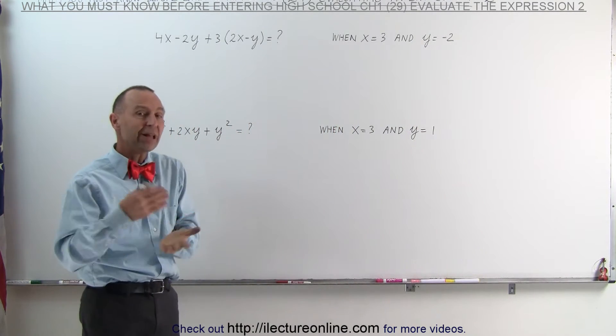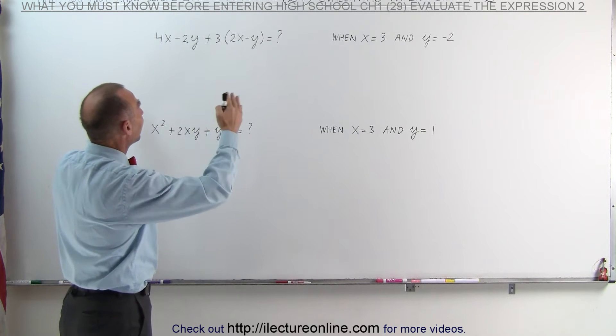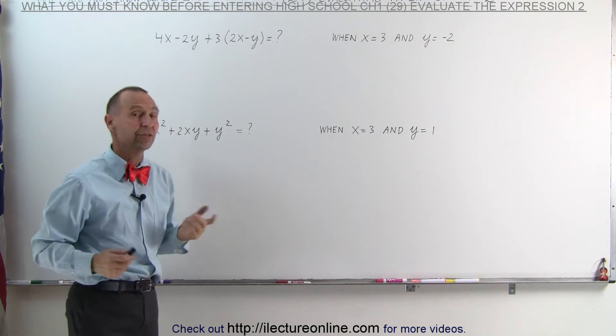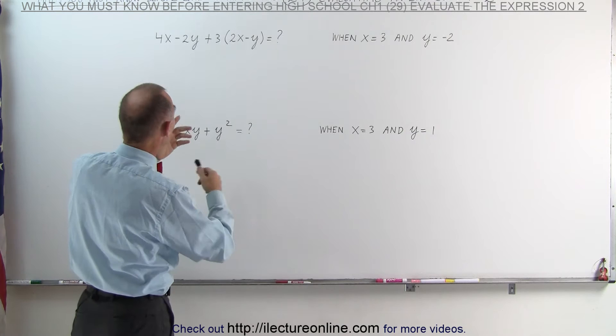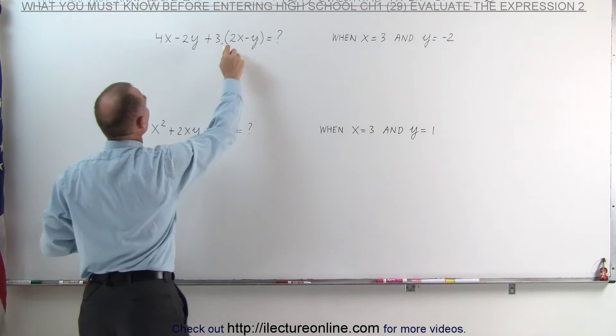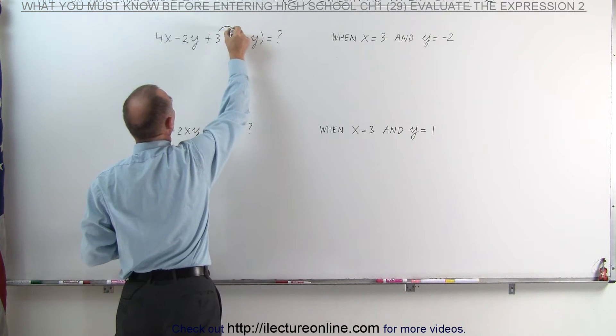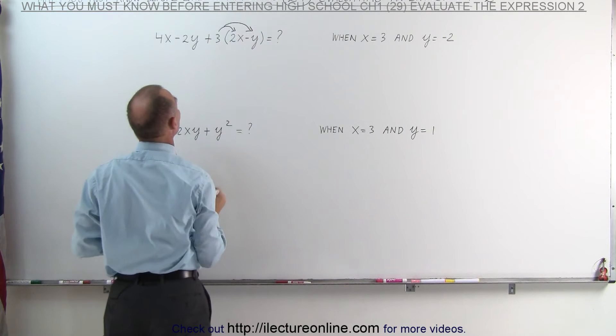But before we can evaluate, we should first get rid of the parentheses and then combine like terms if there are any. Let's go ahead and do that. The first step is to get rid of the parentheses, which means we need to distribute the 3 on both terms inside the parentheses.